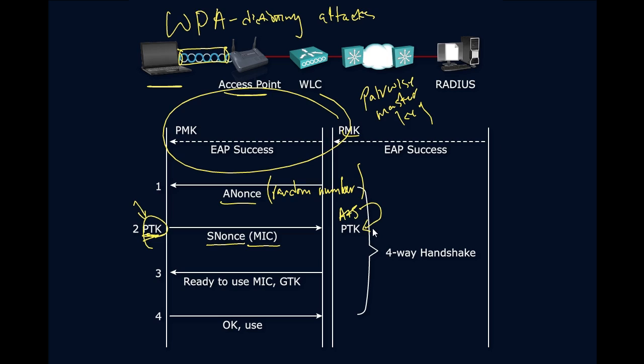The Pairwise Transient Key is completely specific to this session. If the client leaves, a new one has to be created. Now, we have a pairwise transient key for communication between the client and the access point — that's great. But we also need a Group Transient Key, because we need a key for multicast and broadcast traffic.